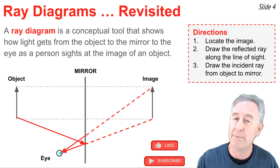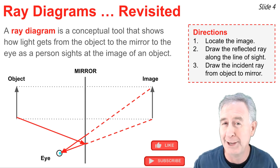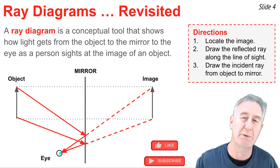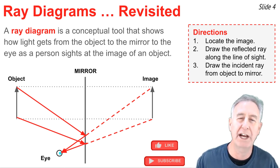you repeat the process for the top extremity of the object, drawing the reflected ray off the mirror first along the line of sight, and then the incident ray from the top of the object to that intersection point of the line of sight with the mirror. When you're done, you've drawn a ray diagram,